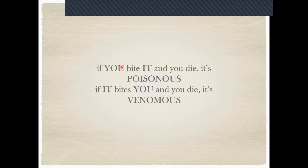Here's a basic definition: if you bite something and you die, it's regarded as poisonous — for example, a poisonous mushroom. But if something bites you and you die, it's venomous. Snakes and scorpions are venomous. And if it bites you and dies, there's something wrong with you — things should not die from biting us.